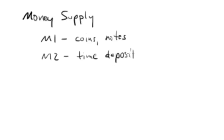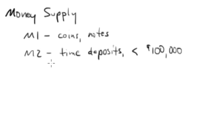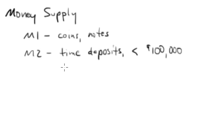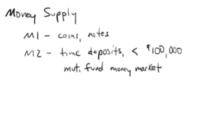M2 is time deposits — short-term time deposits at the bank — and this is only for time deposits less than a hundred thousand dollars, which is important. M2 also covers mutual fund money market accounts, so if you own a money market whether through a bank or a brokerage company, that's what it's covering. This applies when you are a retail customer, a retail investor.